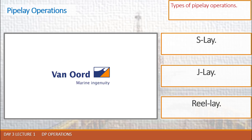A few words about J-lay. If the water depth is greater, unacceptable stresses and strain levels can be imposed on the pipe during the overbend stage. This can be avoided by using the J-lay technique. In J-lay operations, the stinger is configured as a tower angled between the vertical and up to 20 degrees from the vertical. Pipe lengths are pre-jointed into triple or quadruple joints before being raised to the vertical for welding onto the pipe string.